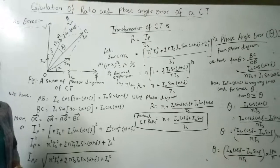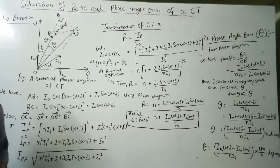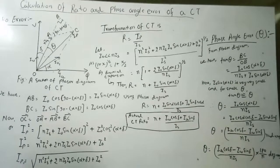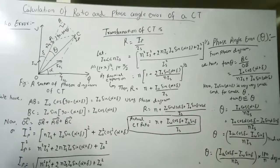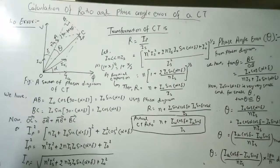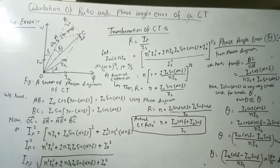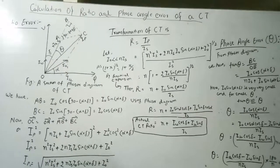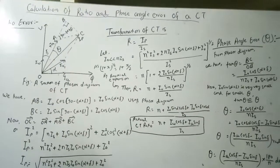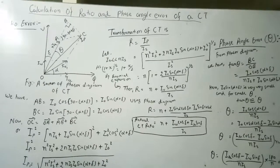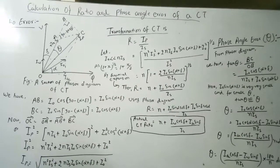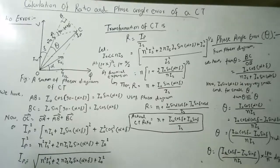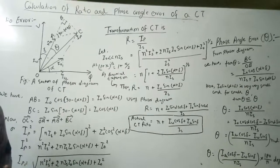In the last lecture, we studied about current transformer and potential transformer — the equivalent circuit and its phasor diagram. As we know, two types of errors occur in a current transformer: one is ratio error and another is phase angle error.